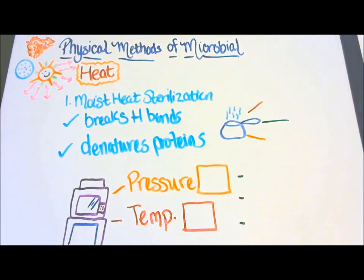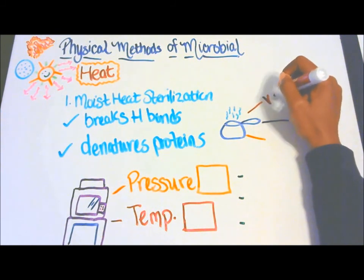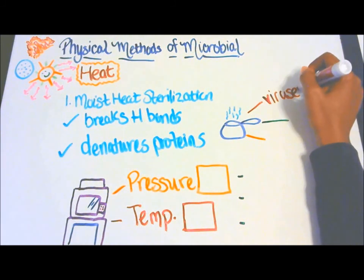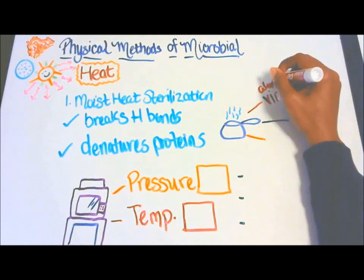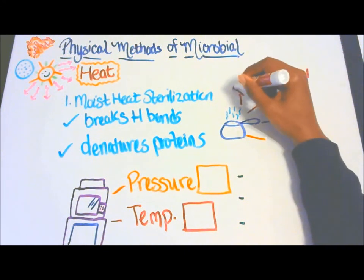Now the types of heating methods are boiling and autoclave. Starting with boiling, you can kill pathogens and almost all viruses.